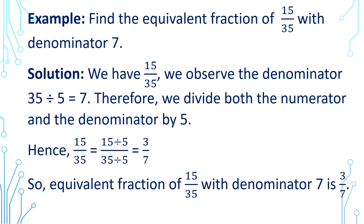We will now find the equivalent fraction of 15 by 35 with denominator 7. We observe that if the denominator 35 is divided by 5, we get 7. Therefore, we divide both the numerator and the denominator by 5. Hence, 15 by 35 divided by 5 equals 3 by 7. So the equivalent fraction of 15 by 35 with denominator 7 is 3 by 7.